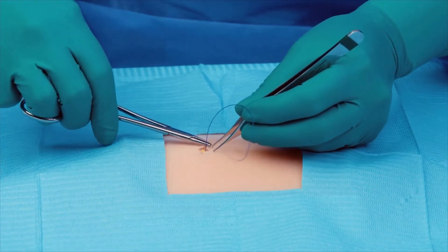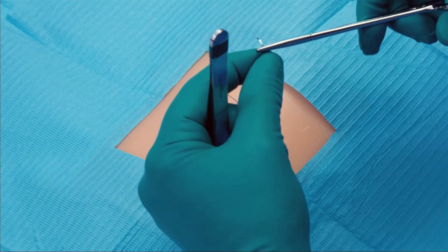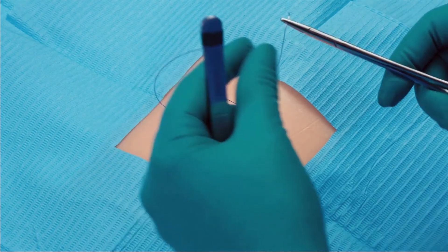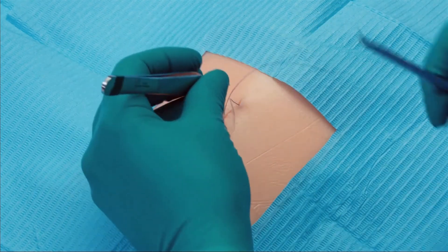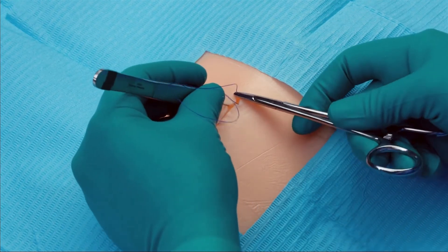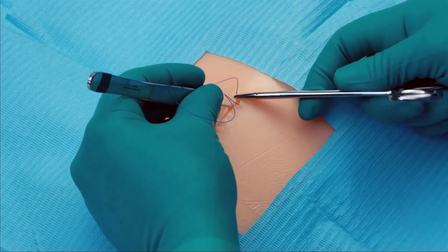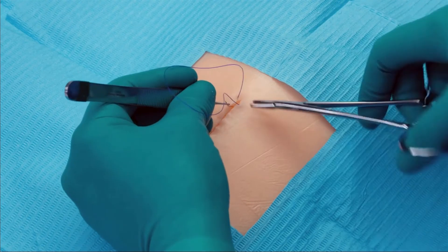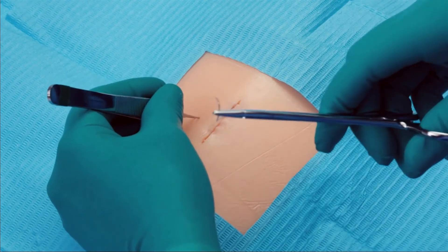Now that the deep dermis is approximated, we can close the superficial layer with the same quill device. In a running subcuticular fashion, take equal bites of the tissue in the horizontal plane of the upper dermis.